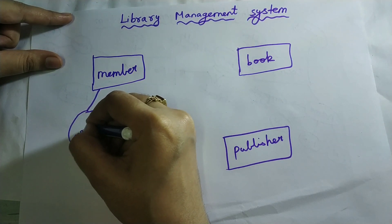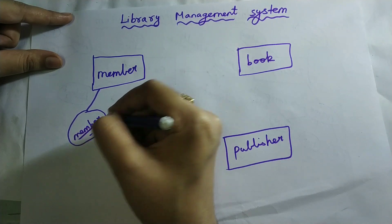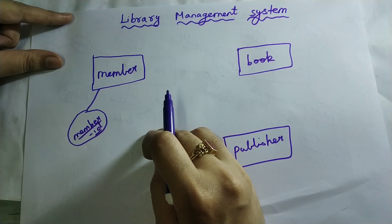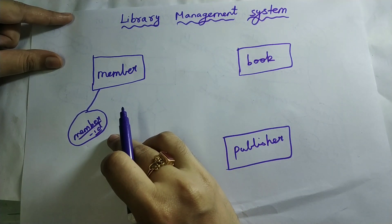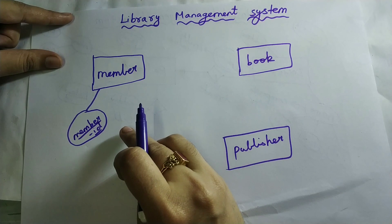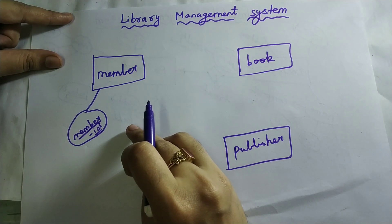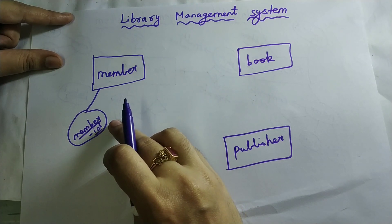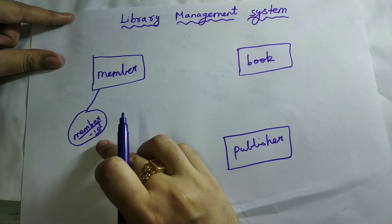So, member ID. If you are going inside the library to take a book, you must be a member of that library. An ID will be given to you. The ID will be unique for every person who belongs to that library. Whoever has joined the committee of that library will have a unique member ID. Therefore, it is a primary key, so I should underline that.